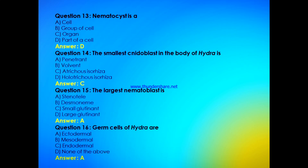The smallest cnidoblast in the body of Hydra is — penetrant, volvent, atrichous isorhiza, or holotrichous isorhiza? The answer is C, that is atrichous isorhiza. The largest nematoblast is — stenotele, desmoneme, small glutinant, or large glutinant? The answer is stenotele.